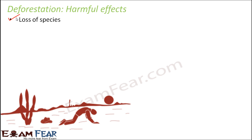Sometimes certain species are specially present only in a particular forest or area. For example, in the Panchmari National Park, there are species unique to that place, like the giant squirrel — a very large squirrel found exclusively there. If that area is completely destroyed, those squirrels will also die because they lose their habitat, food, and environment. Since those species are not present anywhere else, we are going to lose that species forever. So many species are lost due to loss of habitat.